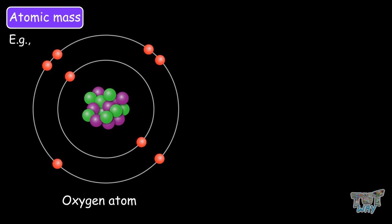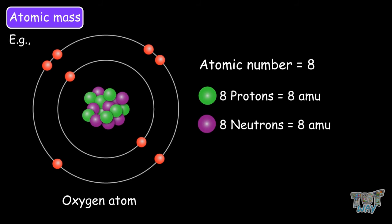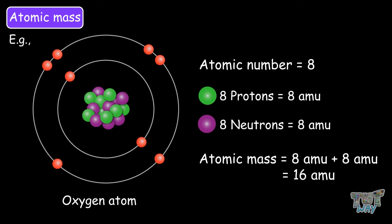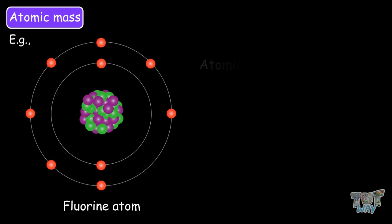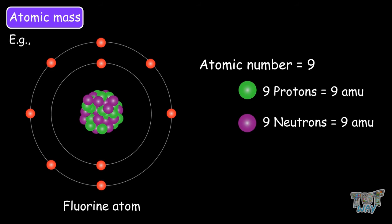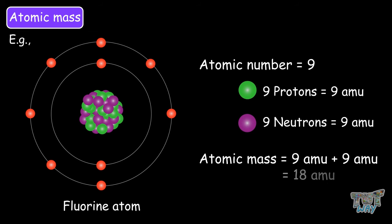Oxygen: the atomic number of oxygen is 8, which means it has 8 protons and 8 neutrons, so the atomic mass is 8 plus 8, which equals 16 amu. Next is fluorine: the atomic number of fluorine is 9, so its atomic weight will be 9 plus 9, which equals 18 amu.